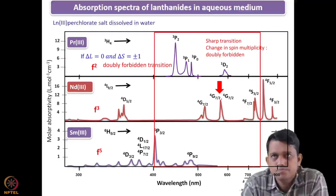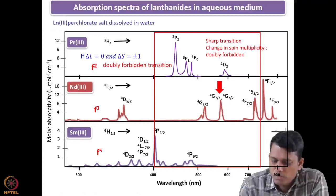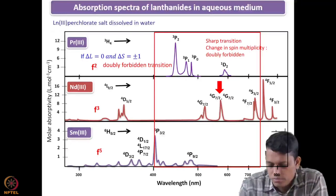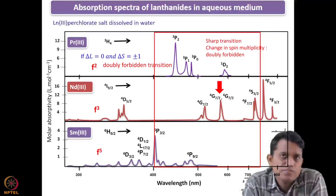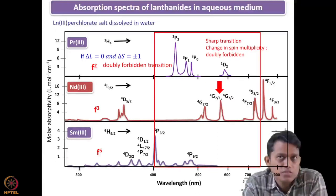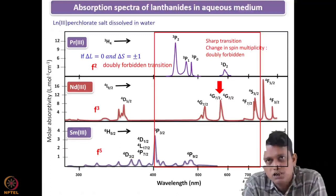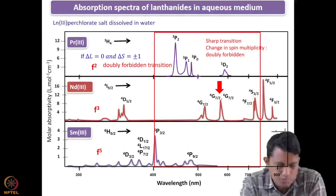If the spin multiplicity is four, those transitions are a bit more allowed compared to those with lower spin multiplicity numbers. I have marked a peak with red color. Some transitions are very much affected by the environment — although these are inner orbitals, they can have some influence, and these are known as hypersensitive transitions. One such hypersensitive transition occurs in the neodymium spectrum, and people use it to get information about the coordination structure and the nature of the coordination complex.